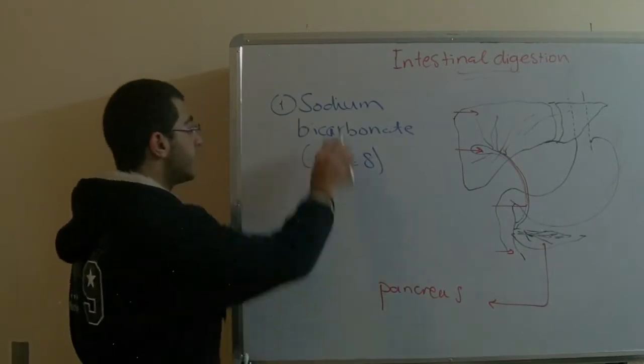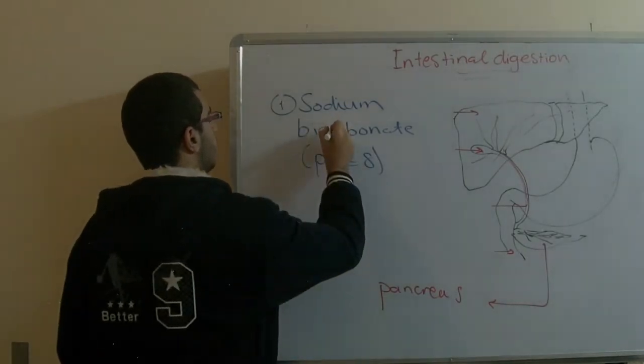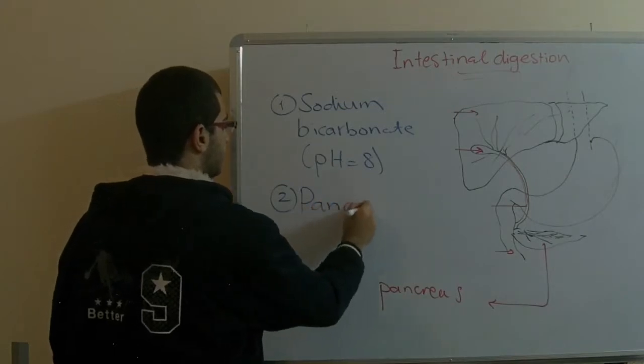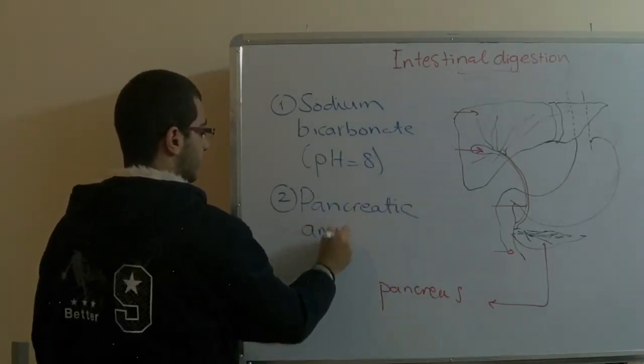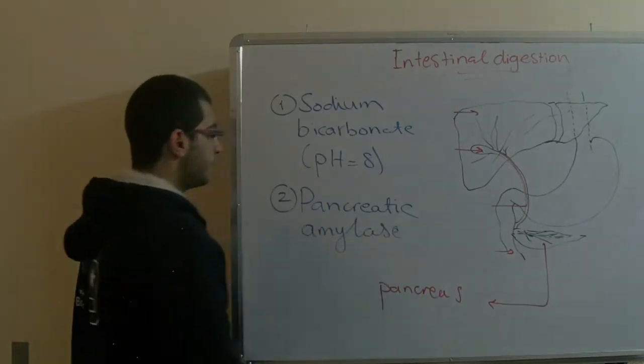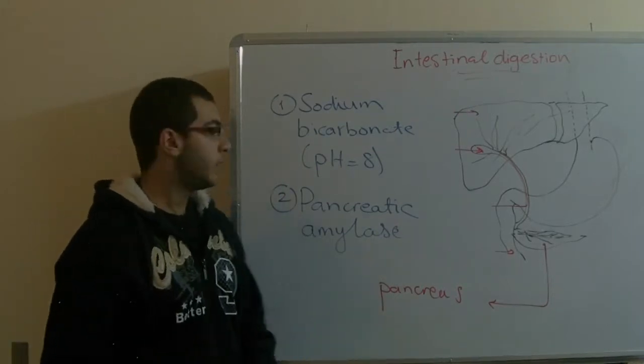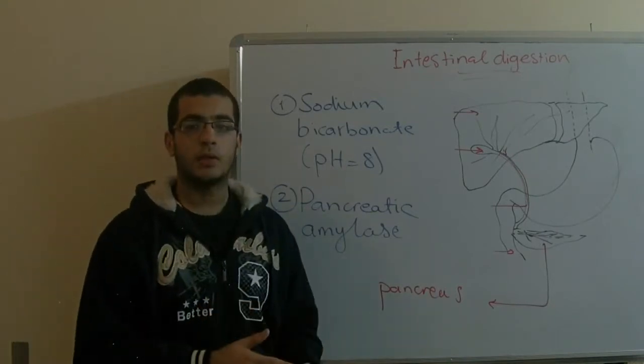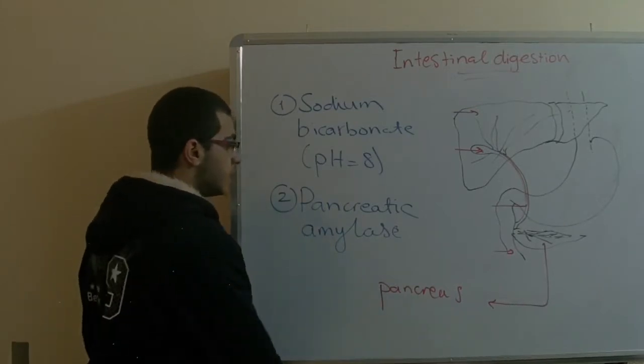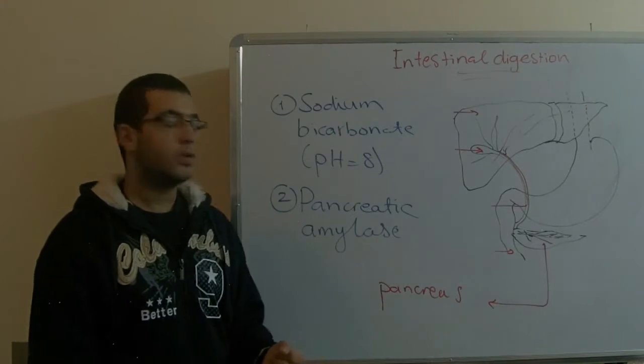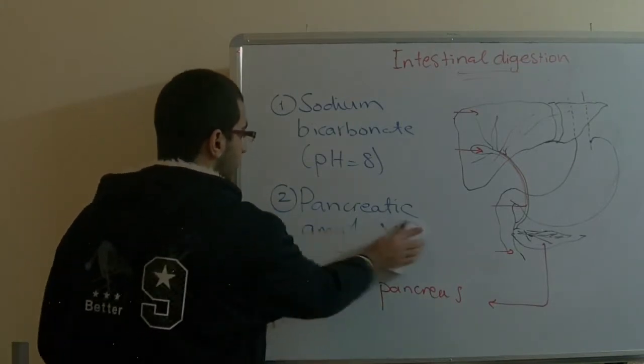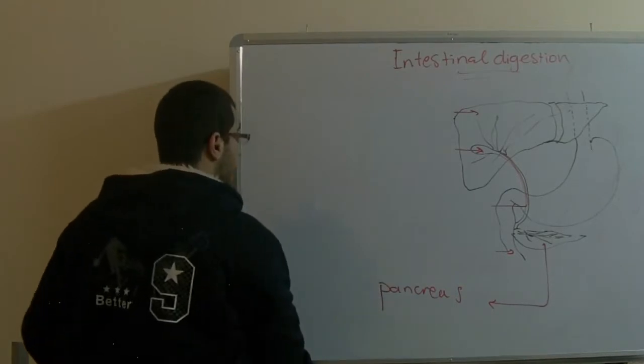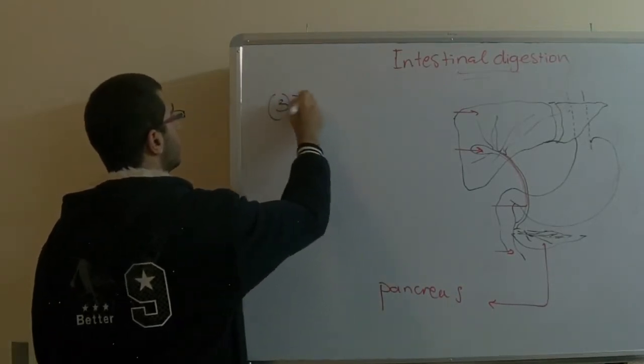It neutralizes the medium of the duodenum. The second secretion is the pancreatic amylase. This pancreatic amylase is similar to the salivary amylase or ptyalin. Its action is to catalyze the hydrolysis of the glycogen and starch into disaccharide maltose. The third secretion of the pancreas inside the duodenum is the trypsinogen.